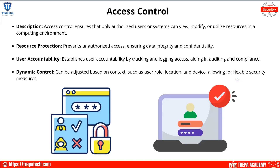Access control ensures that only authorized users or systems can view, modify, or utilize resources in a computing environment. We can implement things like access control lists, least privilege, and set different permissions. We can also have user accountability through tracking and logging access using AAA protocols like TACACS or RADIUS. Access control at the logical level can be dynamically adjusted based on context — for example, if a user in the sales department needs access to the accounting department's file share, we can adjust that on their Active Directory user object or on a local basis.